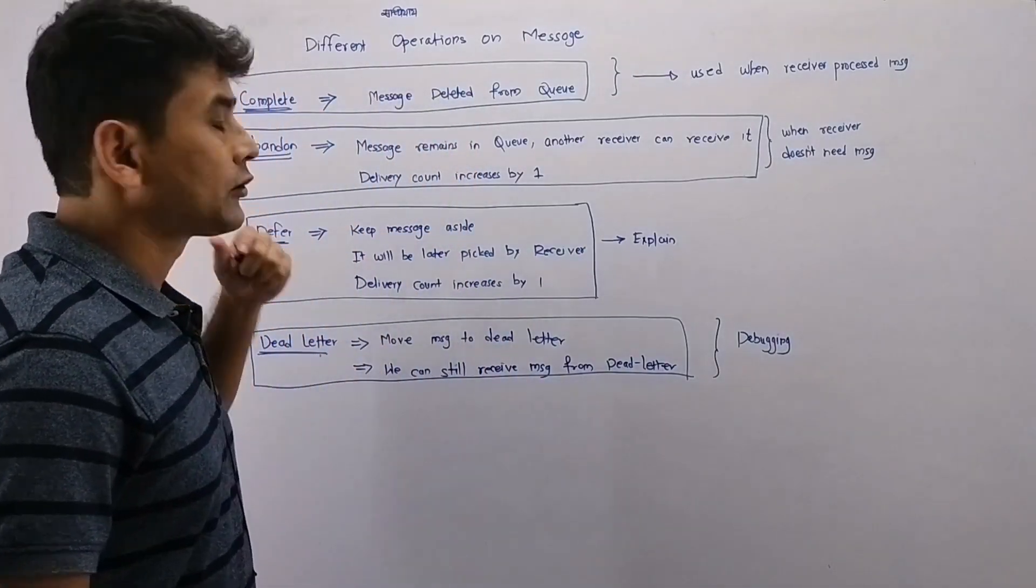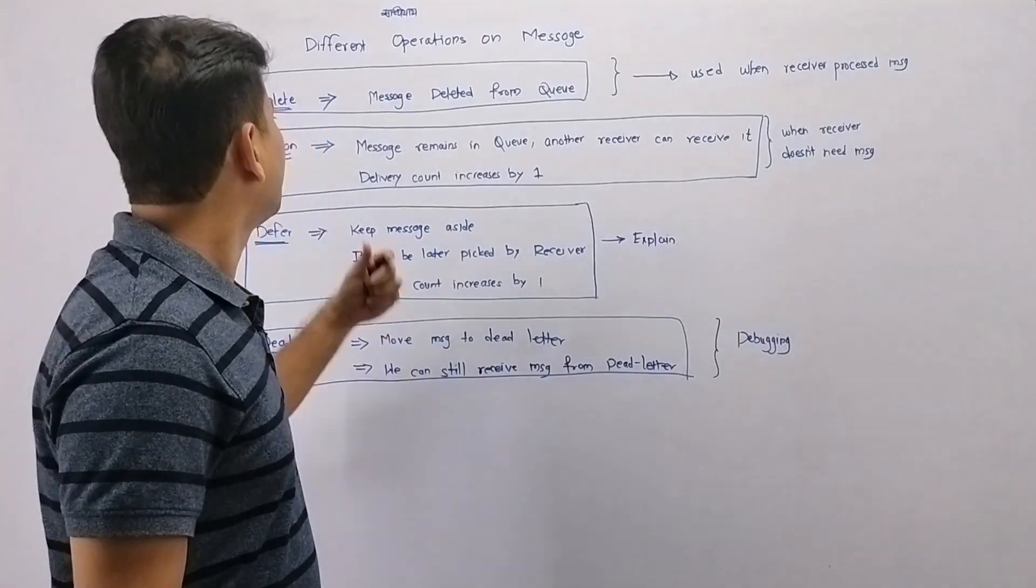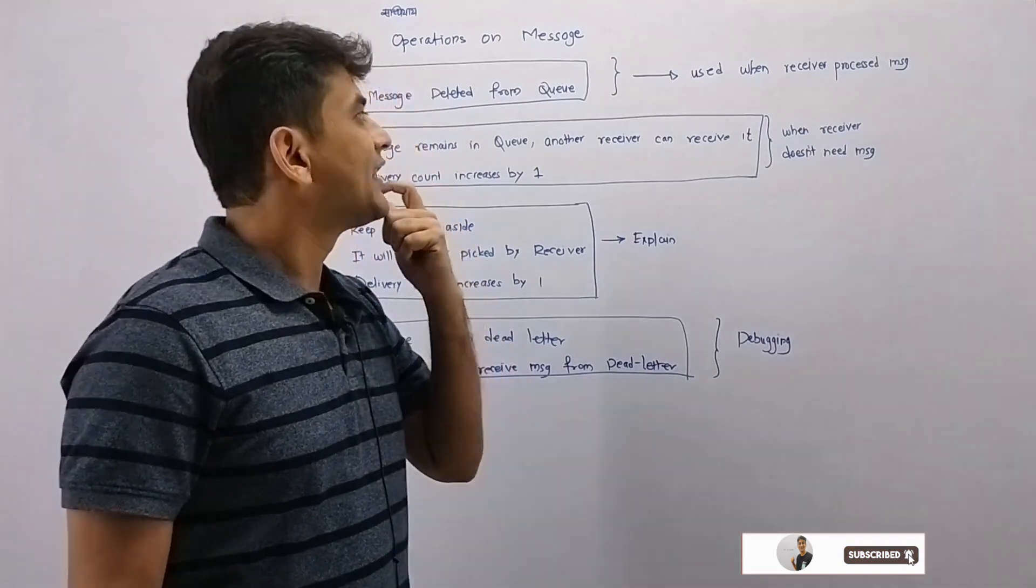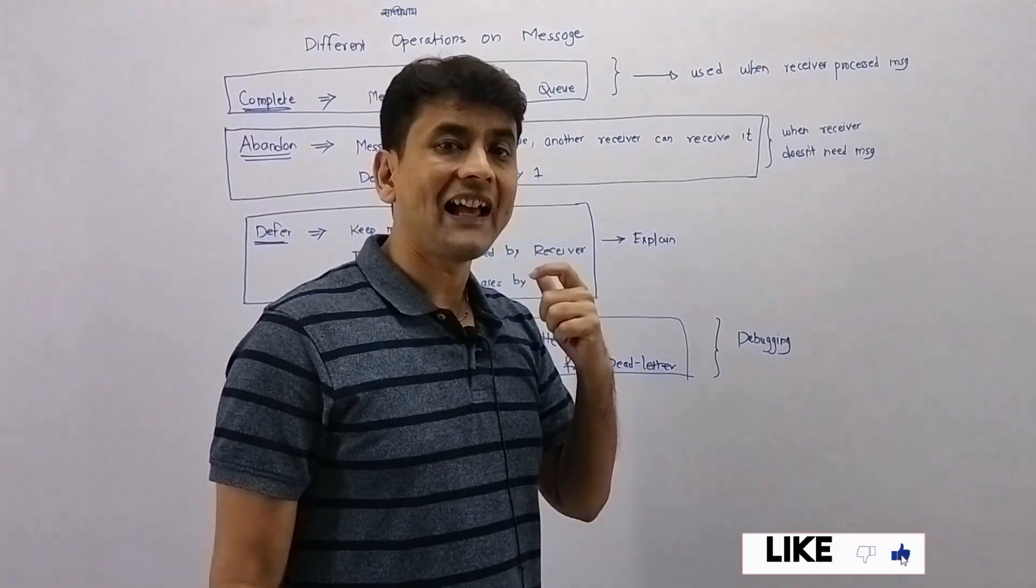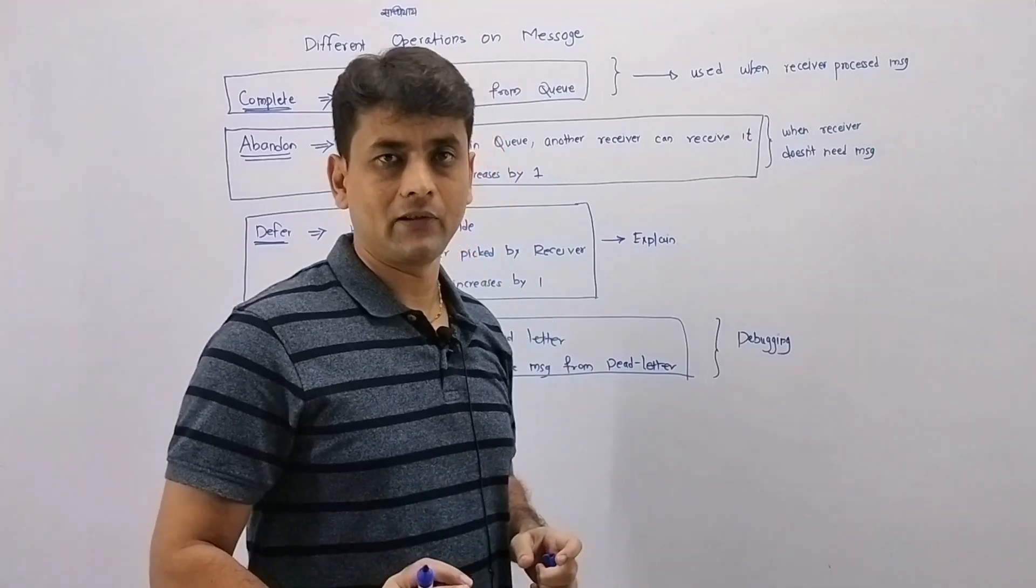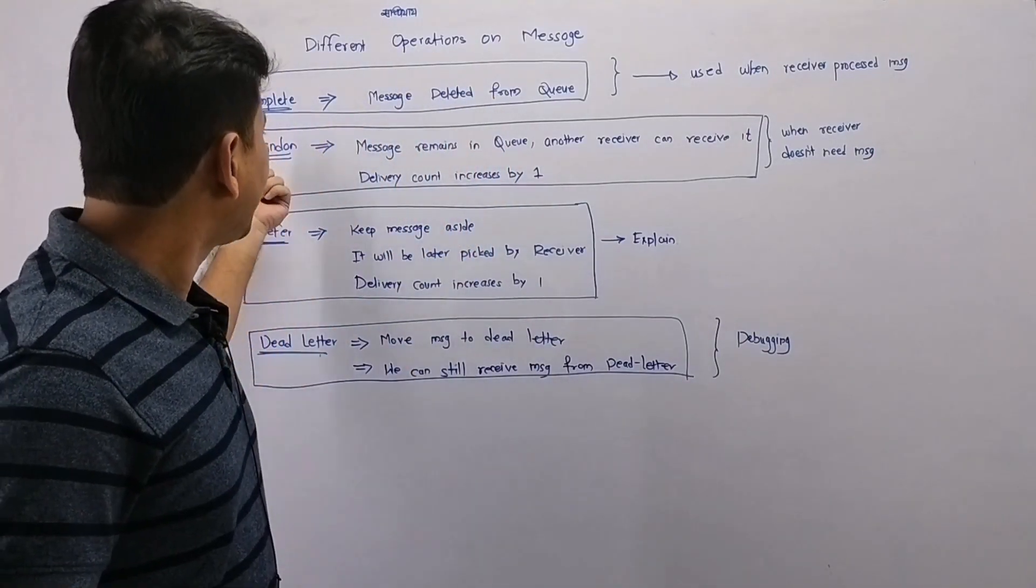First one is complete. When a receiver marks the message as complete, that message will be deleted from the queue. The receiver will mark the message as complete when he has processed that message. Next is abandon.